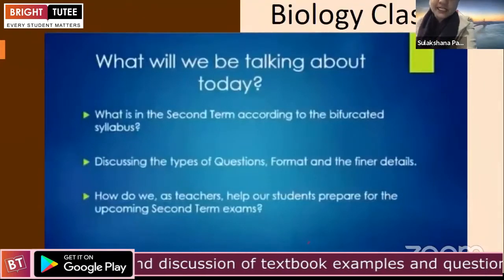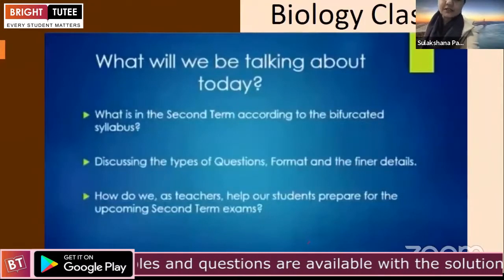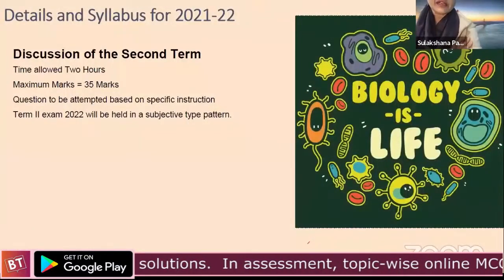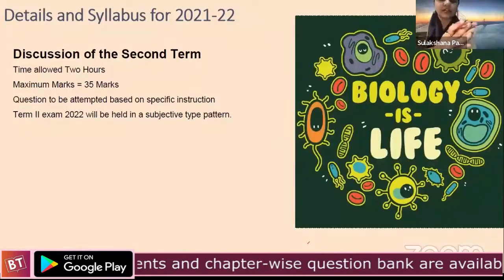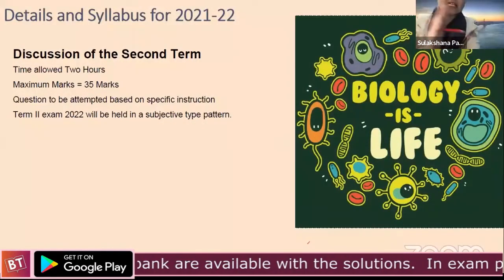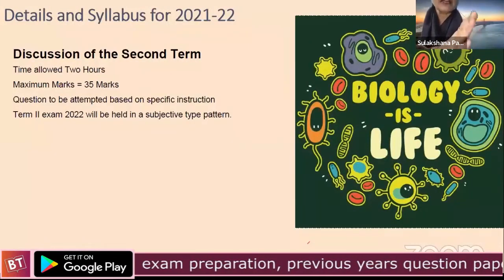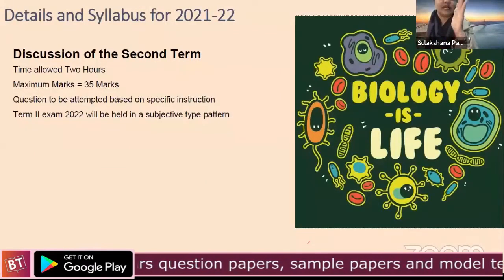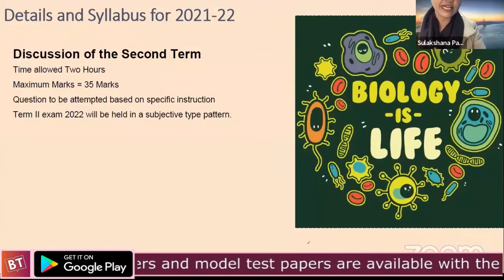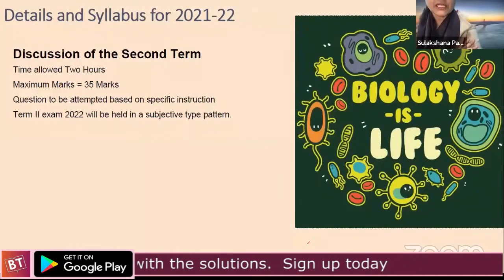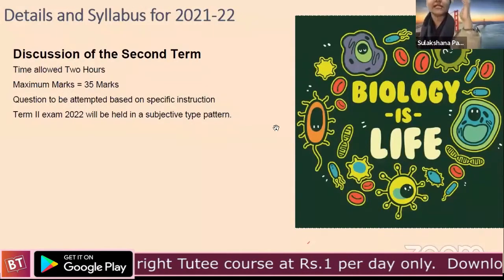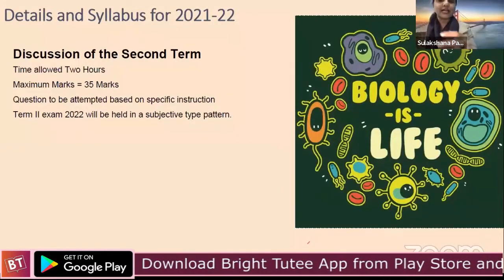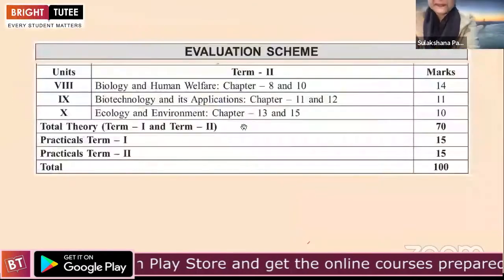For the overall examination, the total time allowed is two hours. Previously, CBSE gave 90-minute exams. Maximum marks are 35, same as Term 1, so both terms together make 70 marks. Questions are to be attempted based on specific instructions given in the question paper. Term 2 is totally based on the subjective type pattern, whereas previously we had objective type — so there is a slight change in the question papers this time.